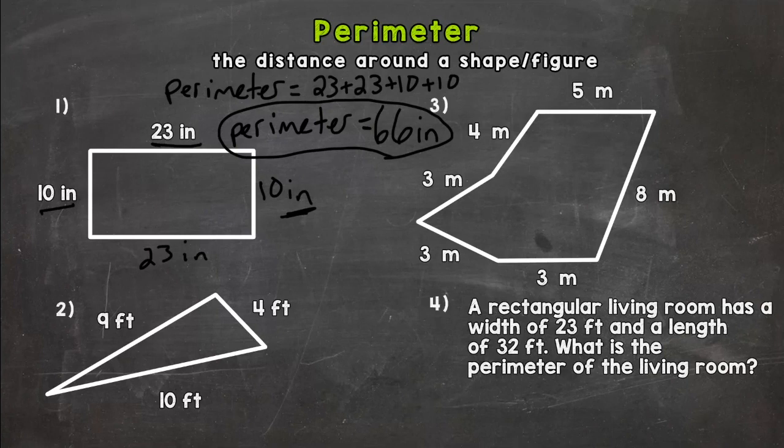So we need to label our answer perimeter equals 66 inches. Again perimeter is the distance around a shape or figure and you need to remember to make sure you include all of the sides. So for number one we had four sides.